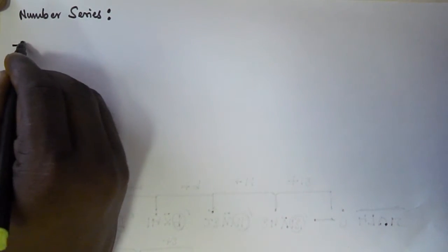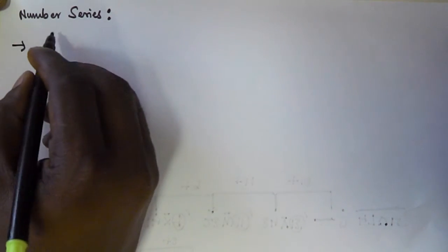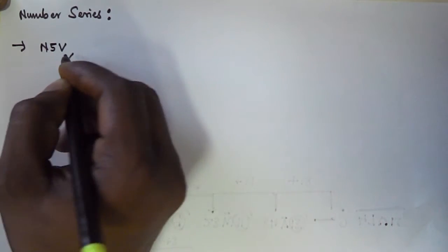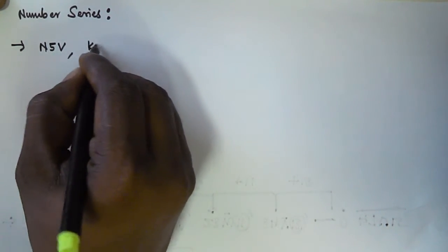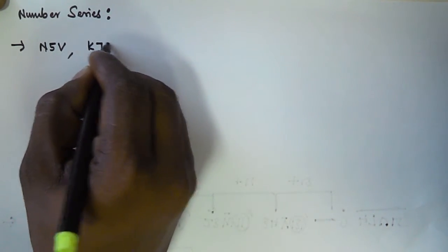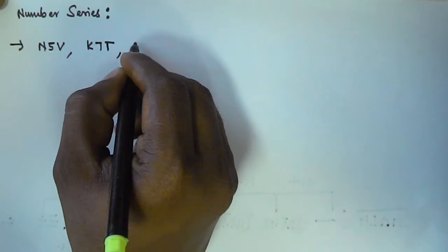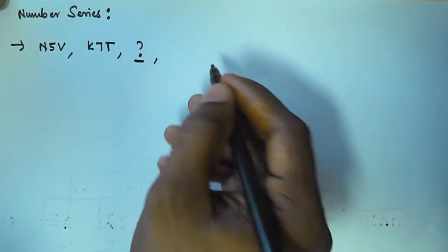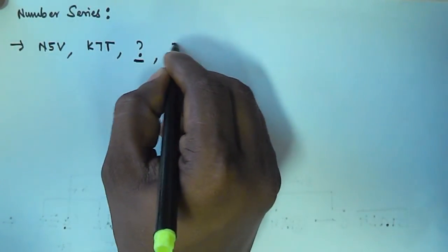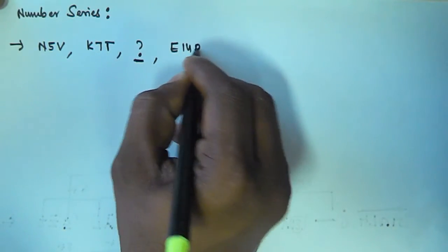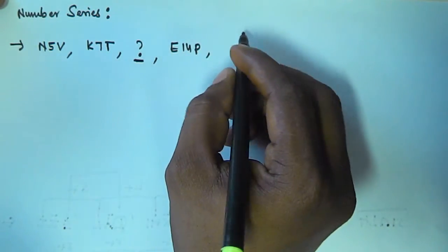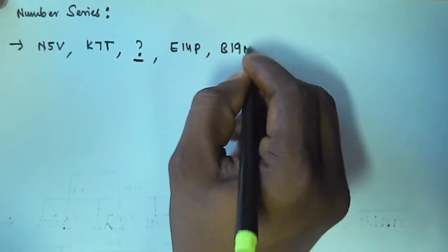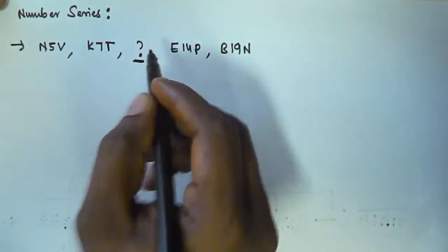The first problem we have is: N5V, K7T, and question mark — that means we have to find the term here — and then E14P and B19N. So we have to find the missing term.